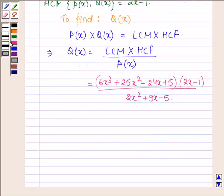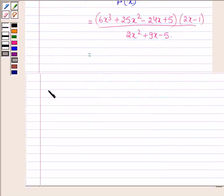Now let us factorize the denominator first. The denominator is 2x² + 9x - 5. This can be written as 2x² + 10x - x - 5 by splitting the middle term.